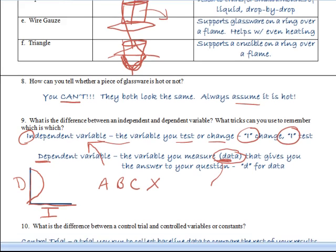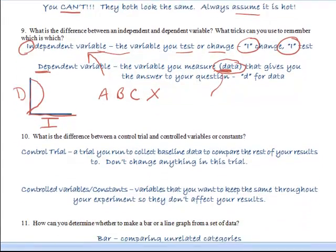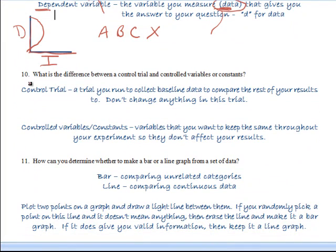And then, what's the difference between a controlled trial and controlled variables or constants? Well, a controlled trial is a trial that you really don't do anything to. You don't change anything. You just want to collect baseline data. And then you're going to start manipulating things. So for instance, if I'm dealing with the ski wax issue, I would probably try to run down the mountain without any ski wax and see how fast I get down that way. And then after that, I can put the different ski waxes on and see if that alters my time at all.